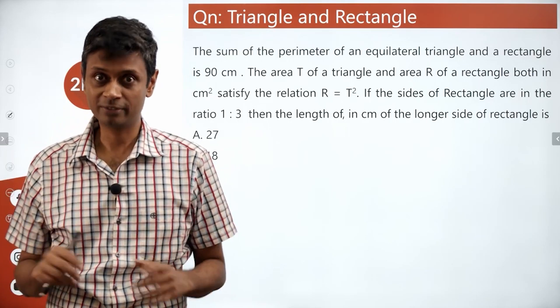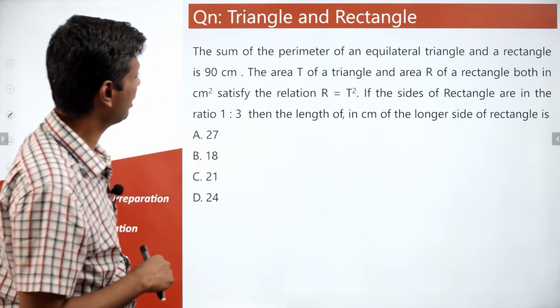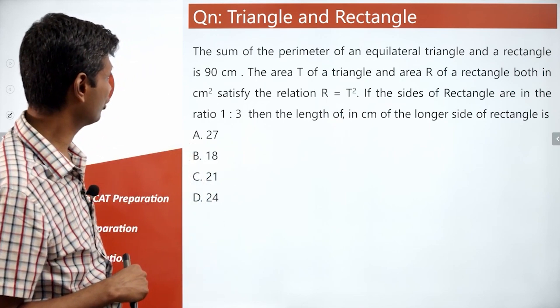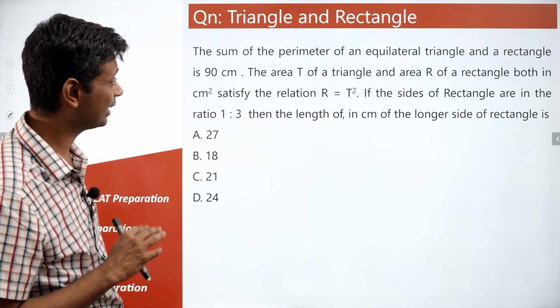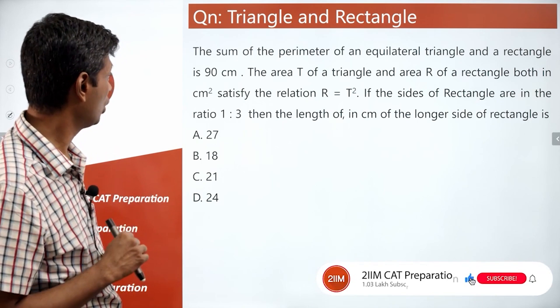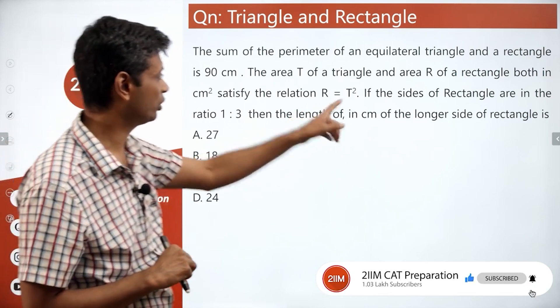Let's do this really big question. I want to read this and then tell you what my peeve with this is. The sum of the perimeter of an equilateral triangle and a rectangle is 90 centimeters. The area T of the triangle and area R of a rectangle both in centimeter square satisfy the relation R equal to T square.